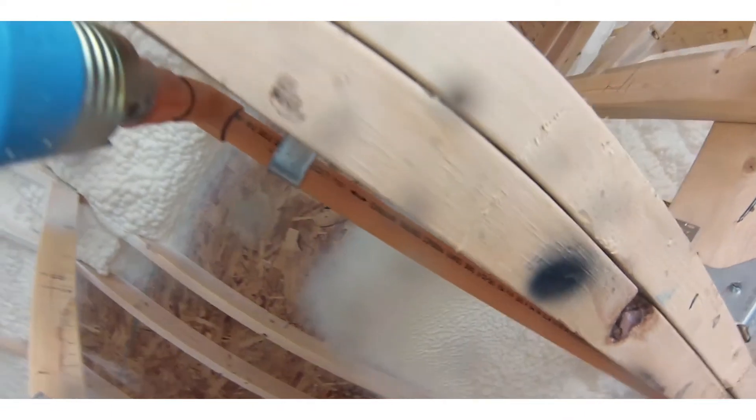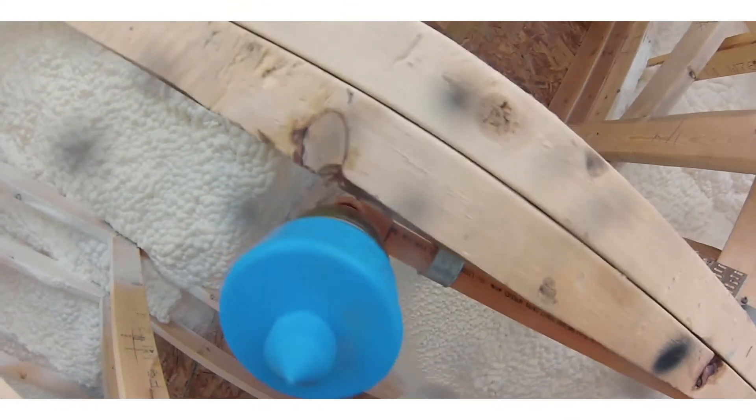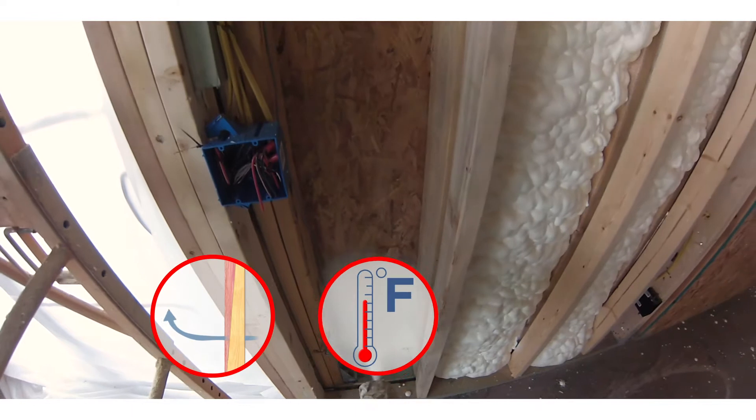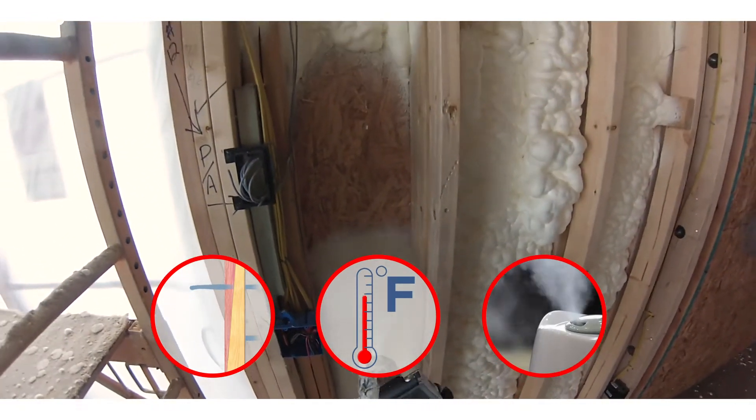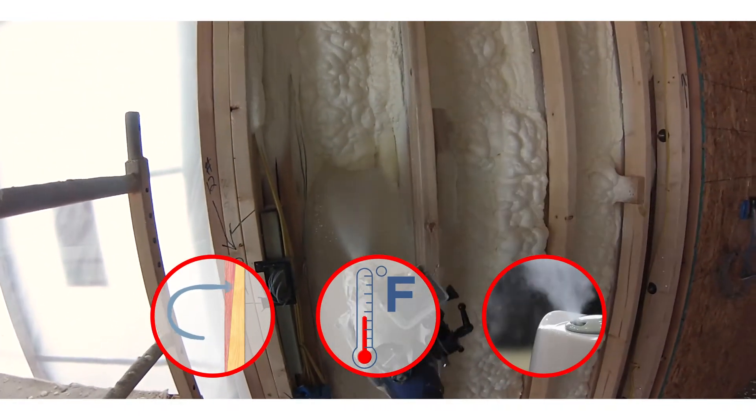The determination of a material's R-value is done in a controlled environment, so factors like air leakage, different temperatures, and humidity can reduce the material's ability to perform to its stated R-value.